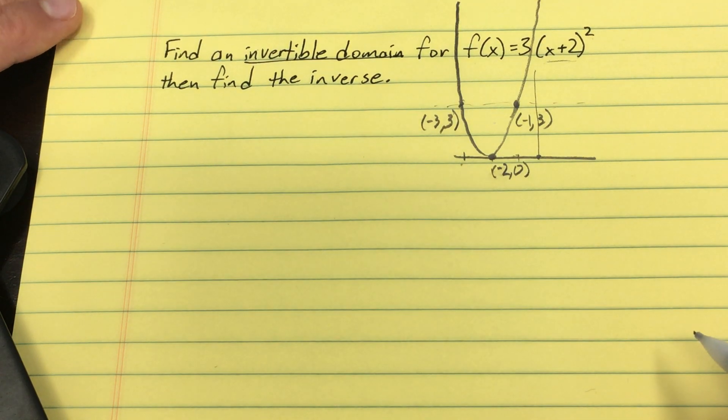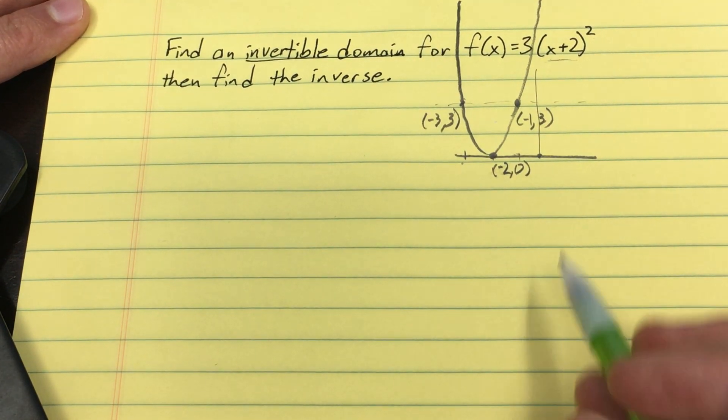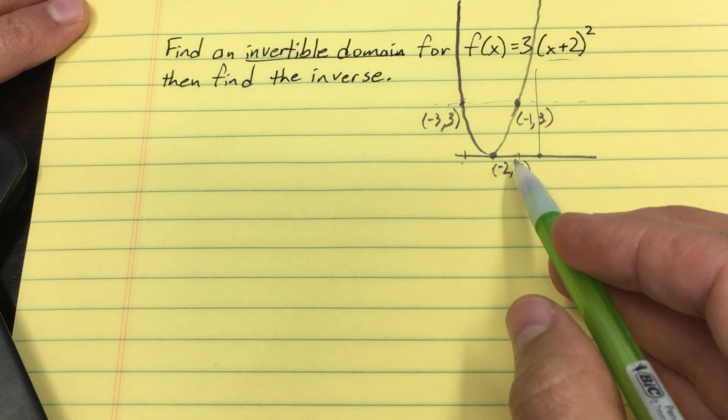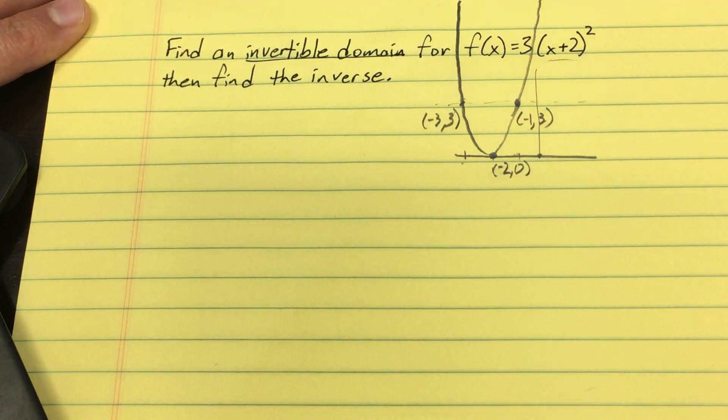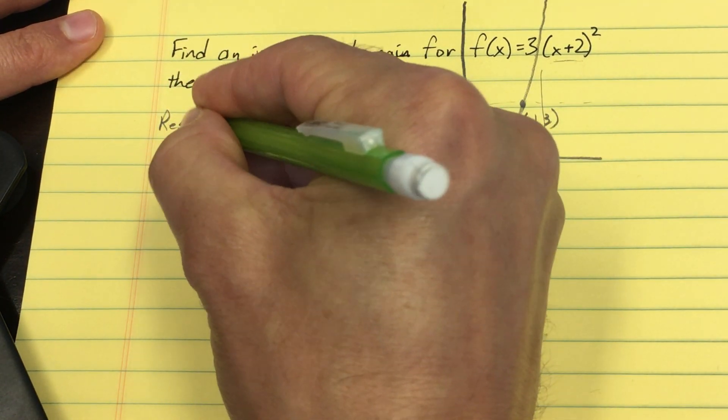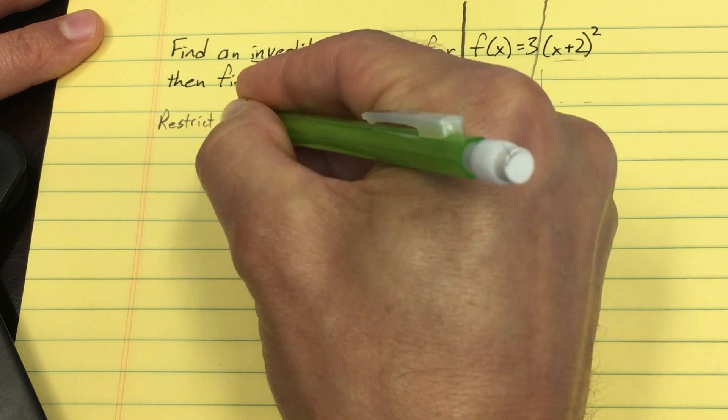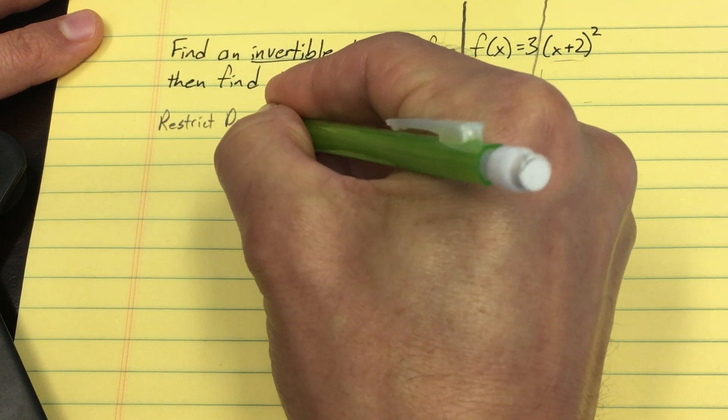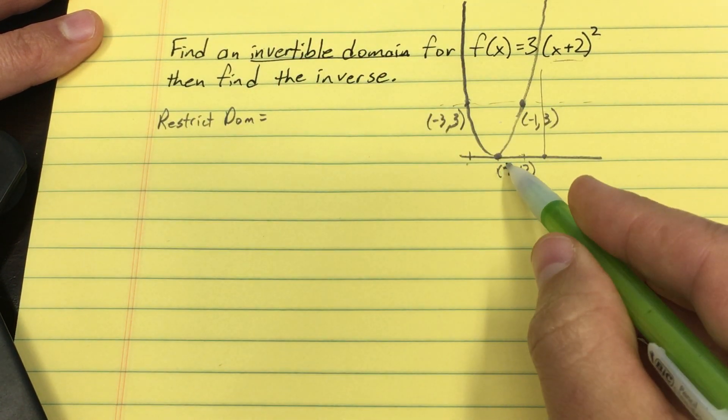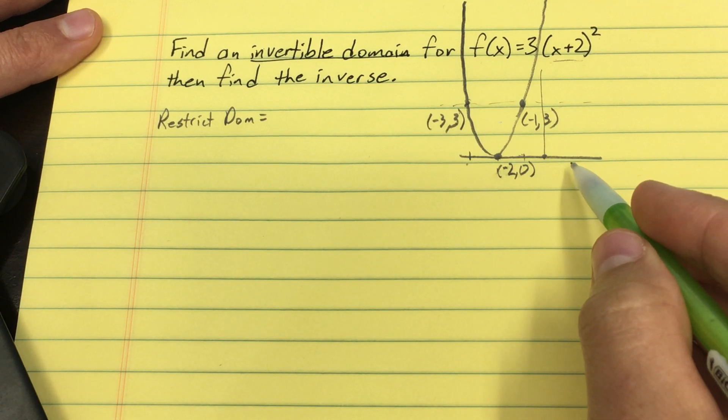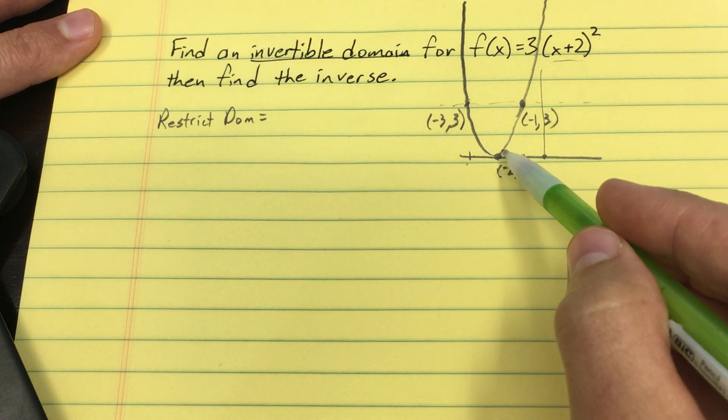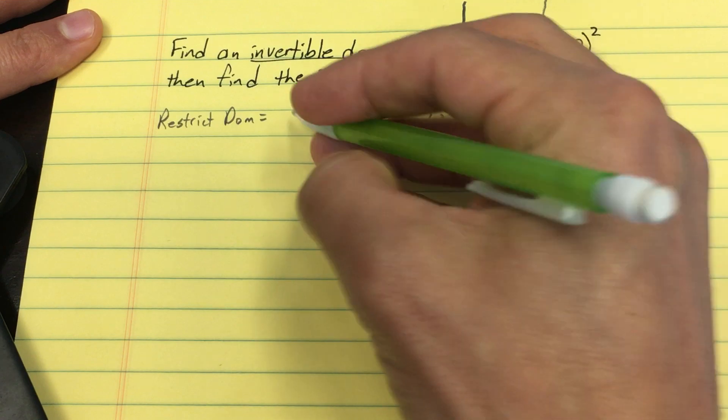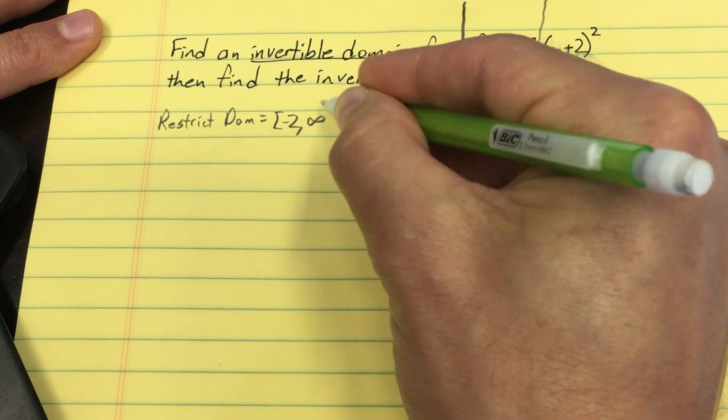But here's what I want to say to you. What if you restricted the domain? In other words, what would you have to restrict it to so that every output would only come from one input? How about -2 to infinity?